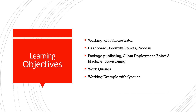So we'll be working with the Orchestrator. We need to understand the architecture of UiPath Orchestrator — how various components work, how logging works, how you can communicate with a third-party system. We'll also look at dashboards, security features, robots, and processes. Today we'll try to work on deploying a package, and we'll look at client deployment and robot and machine provisioning. I might not be able to complete robot and machine provisioning in the first lecture because a lot has changed in UiPath Orchestrator.